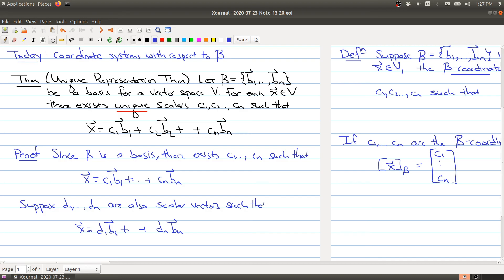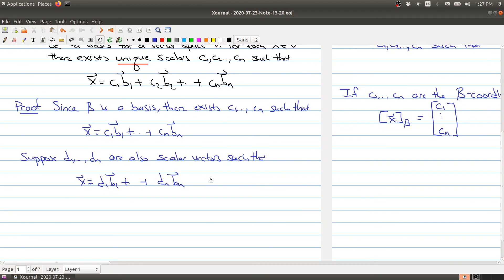Suppose d1 through dn are also scalar vectors such that x can be written as d1 times the first vector up to dn times the last vector. So we have two different ways of writing the x. And what we want to do is show that actually there is no difference between these two. And here's what the fact that we're going to use is: then the zero vector is going to be the same when you get x minus x. That should be clear. The zero vector is what you get when you subtract x from itself.